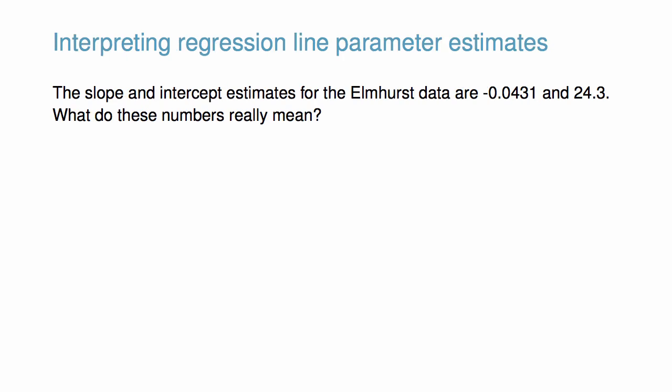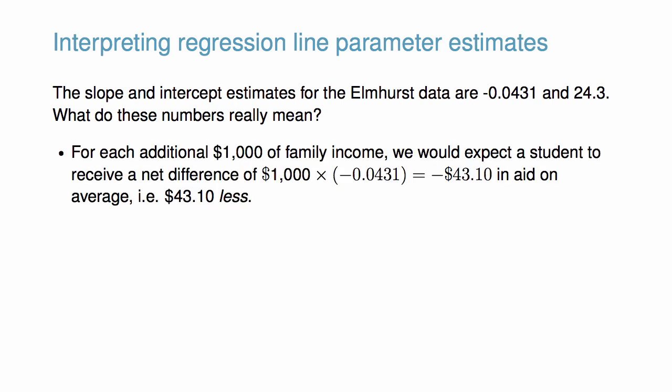Interpreting the slope parameter is helpful in almost any application. For each additional $1,000 of family income, we would expect a student to receive a net difference of $43.10 less aid. Note that a higher family income corresponds to less aid because the coefficient on family income is negative in the model.